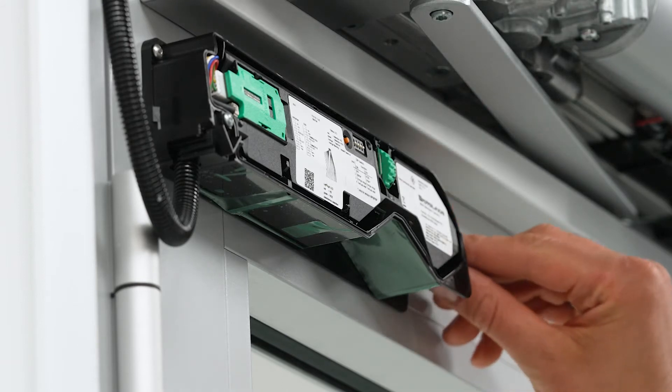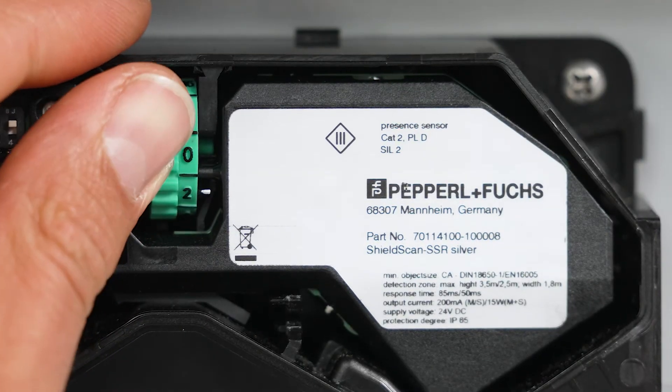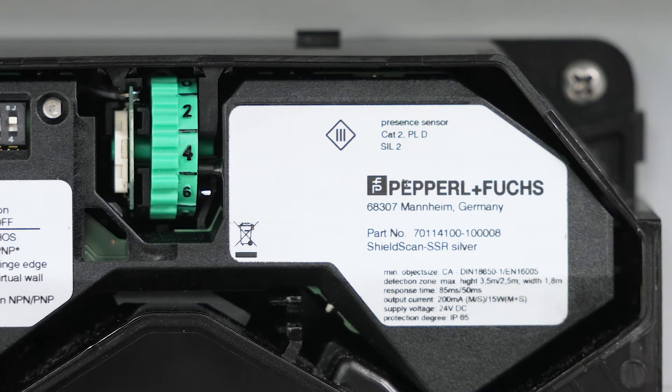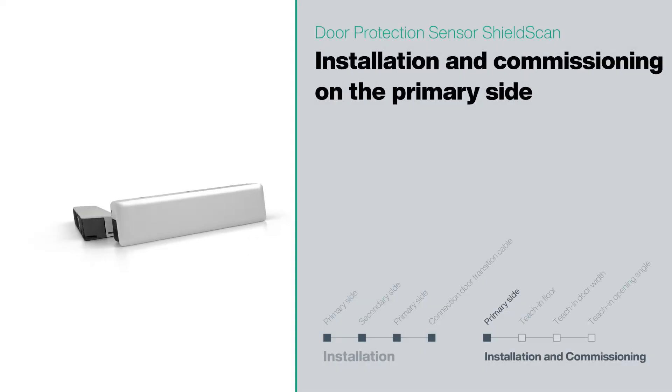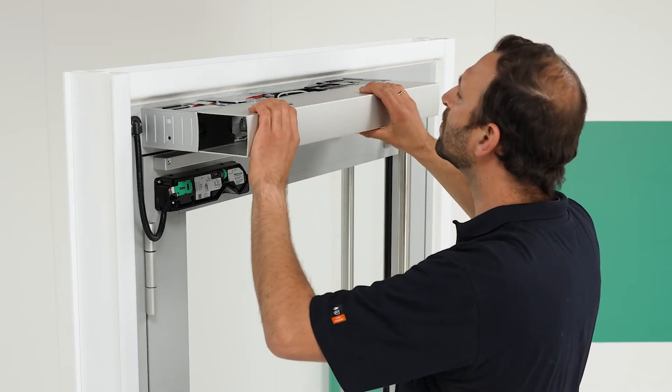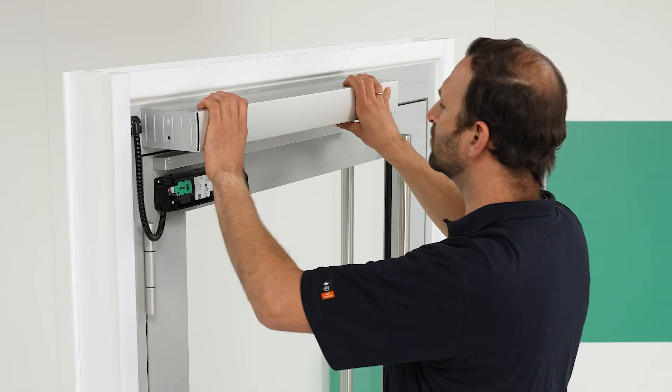Before proceeding with the teach-in procedure, remove the protective film from the lens. Finally, set the adjustment dial for the opening angle of the primary and secondary sensors as specified in the instruction manual for the specified door height. Once both modules have been installed and the primary sensor has been connected to the door controller, put the cover back on the door controller.